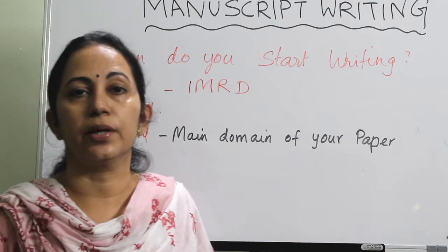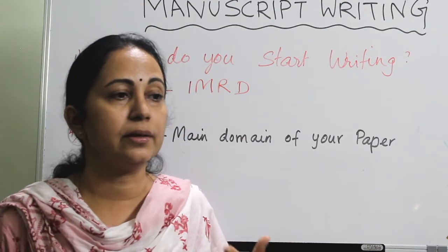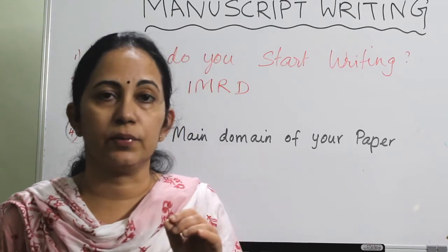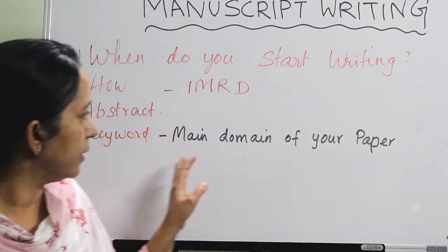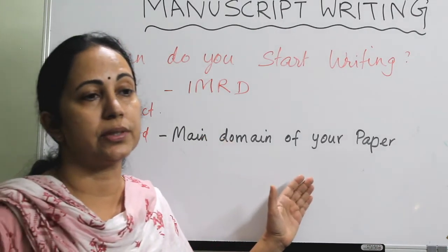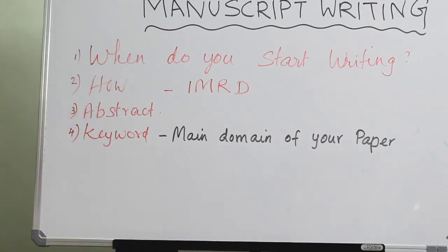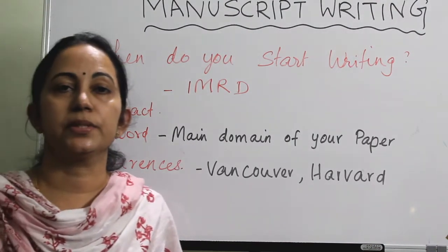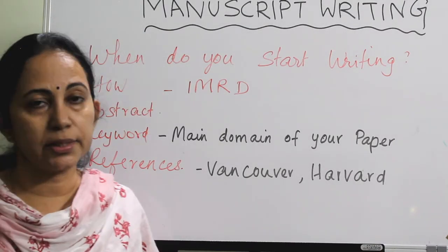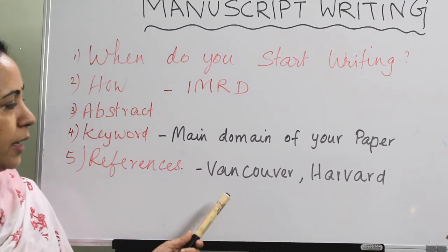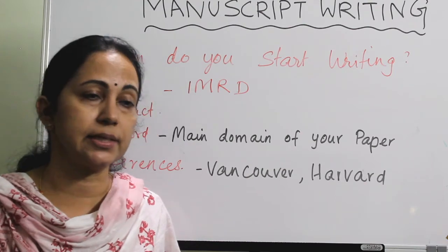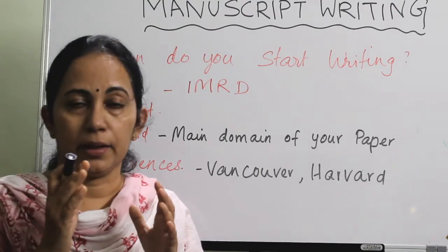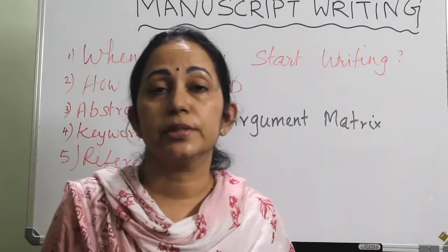Keywords are important: if you select very good keywords, the chance of your article being picked up when a reader or scientist enters the keyword into a search engine increases. Always use keywords related to your title and the main domain of your research paper. For references, give a reference to all information used in your manuscript. Journals give specifications on the style — such as Vancouver or Harvard style. You can do it manually or use reference management software, and list them either alphabetically or numerically.